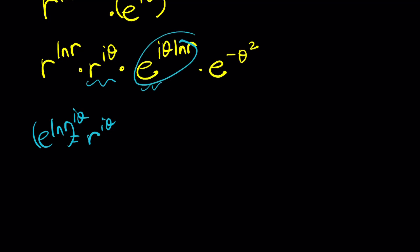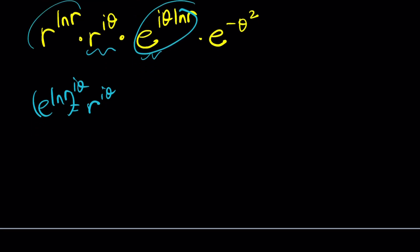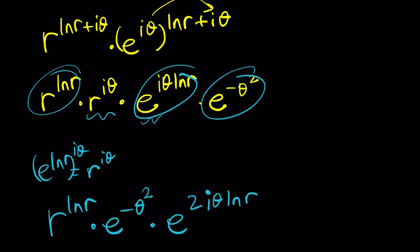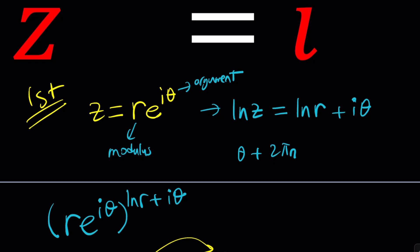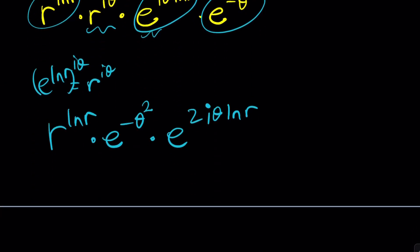So, we're going to get as the real pieces, these two things. So, I'm going to write them together. R to the ln R times e to the negative theta squared multiplied by e to the power 2i theta ln R. Awesome. Here's what we can do. This is equal to what? i, right? We didn't ln both sides, so this should be i.